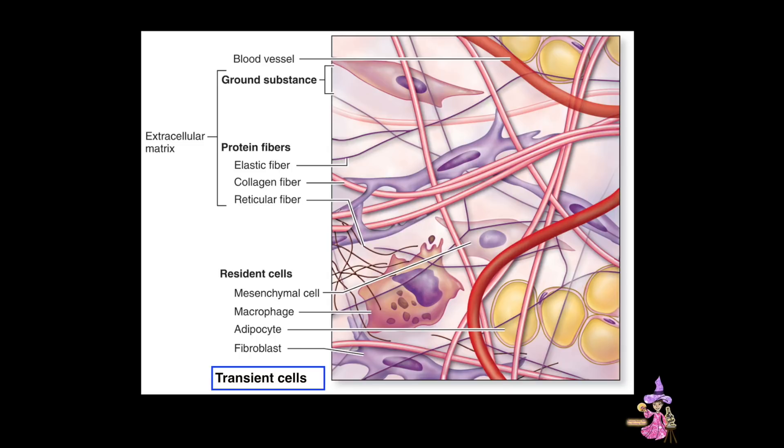We'll come back to the specialized connective tissue, such as blood, bone, and cartilage, and go into more details about cell functions in later videos. Keep in mind that we'll look at and discuss connective tissue in virtually every body system in this unit, so there will be plenty of opportunities for reinforcement of major concepts and details.